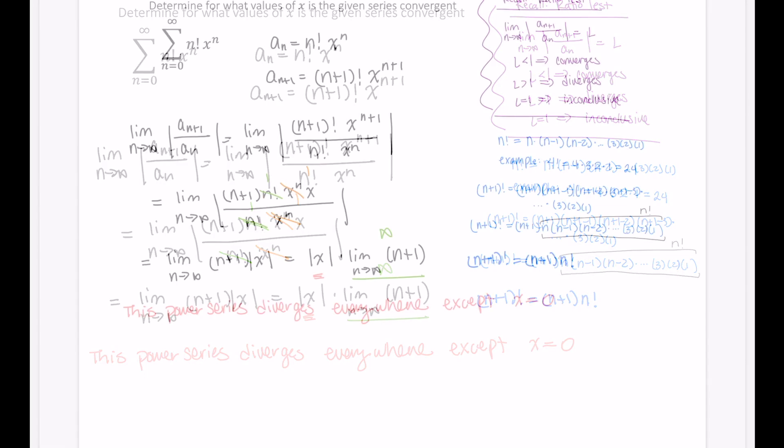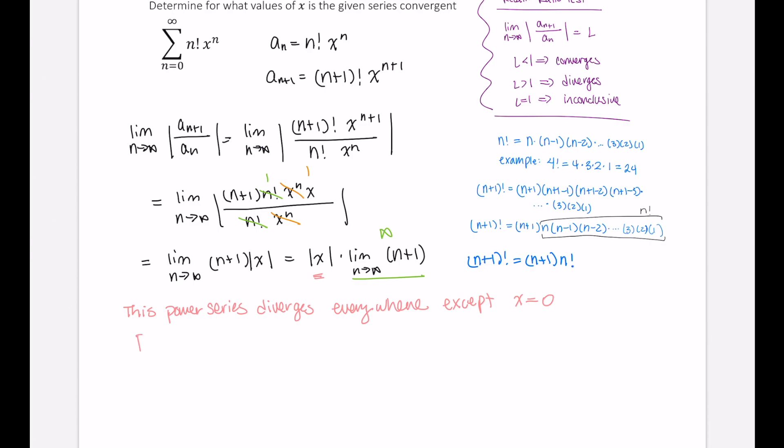Okay, so what does that tell me? This tells me that my radius of convergence, r, is equal to 0, and the interval of convergence is just a single point of 0.